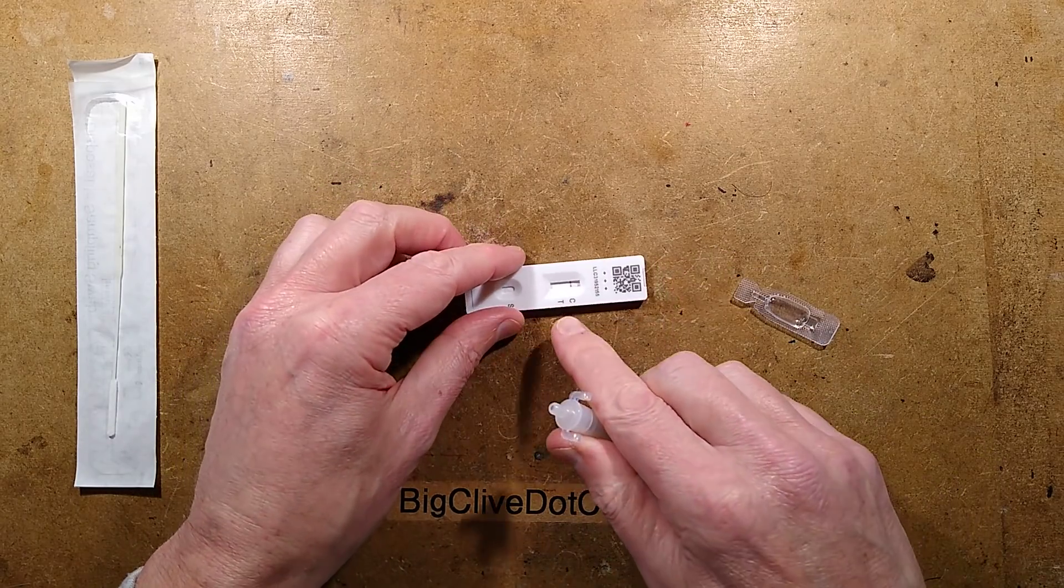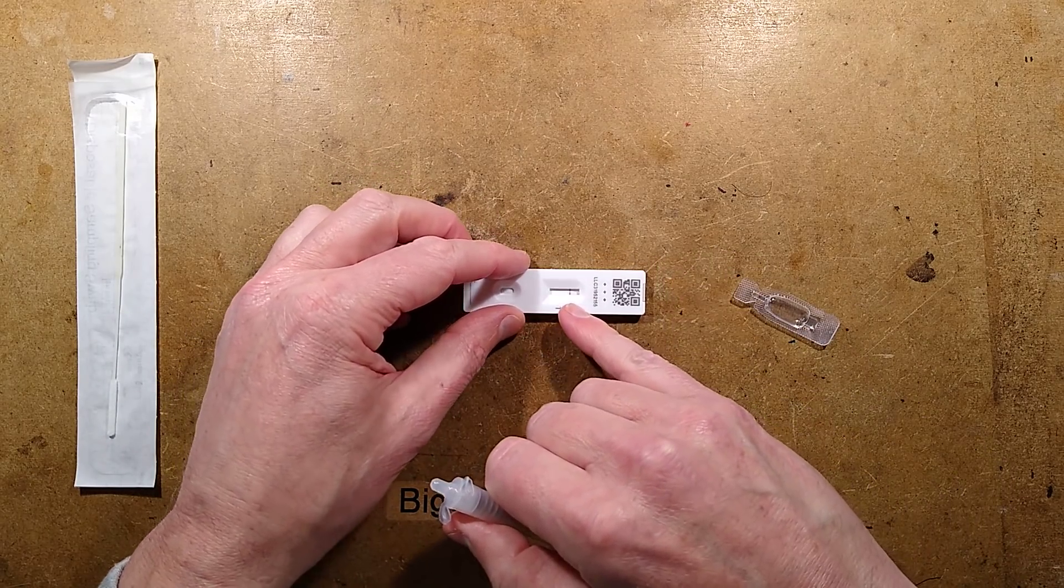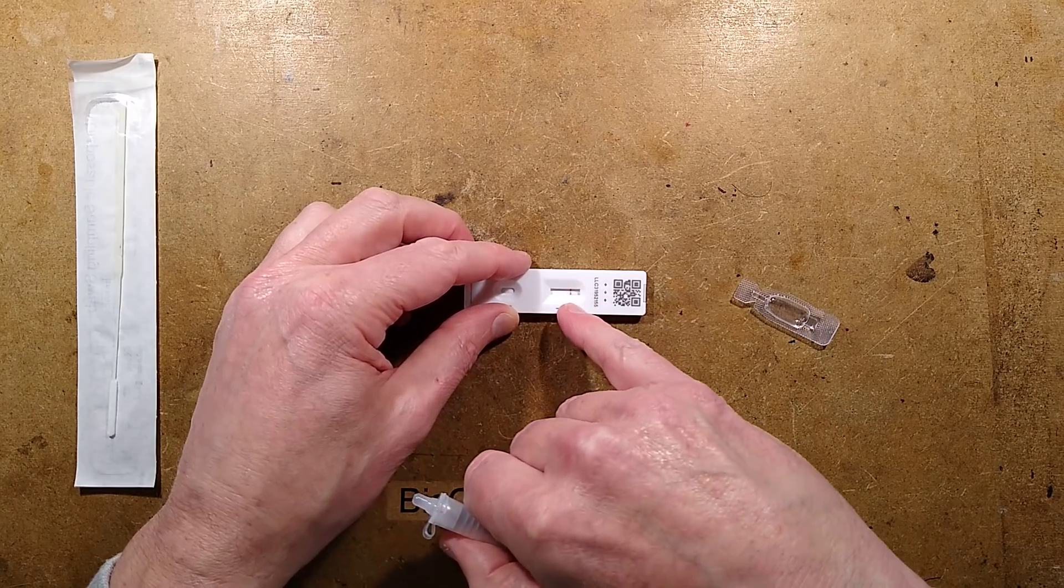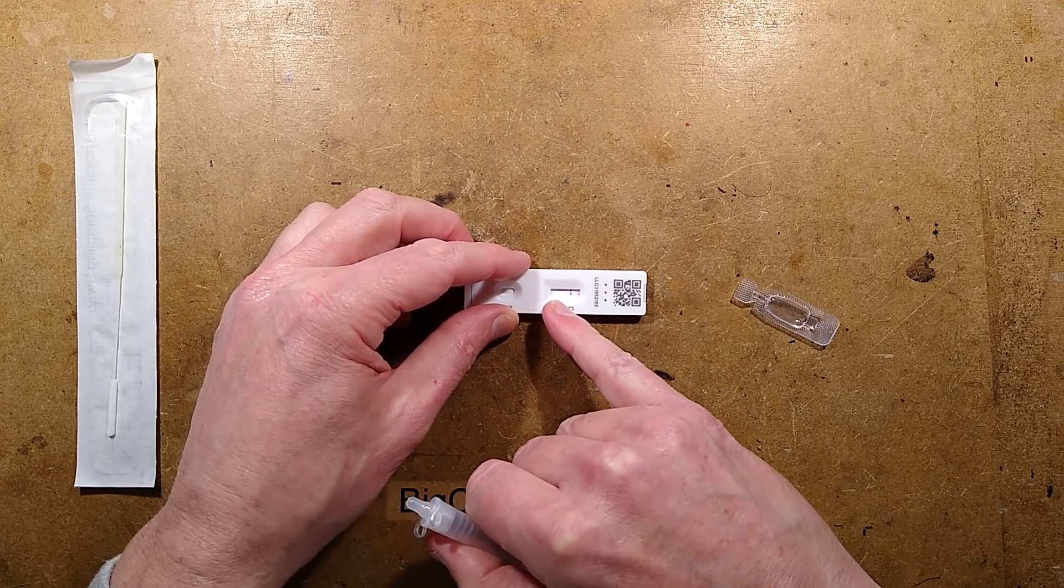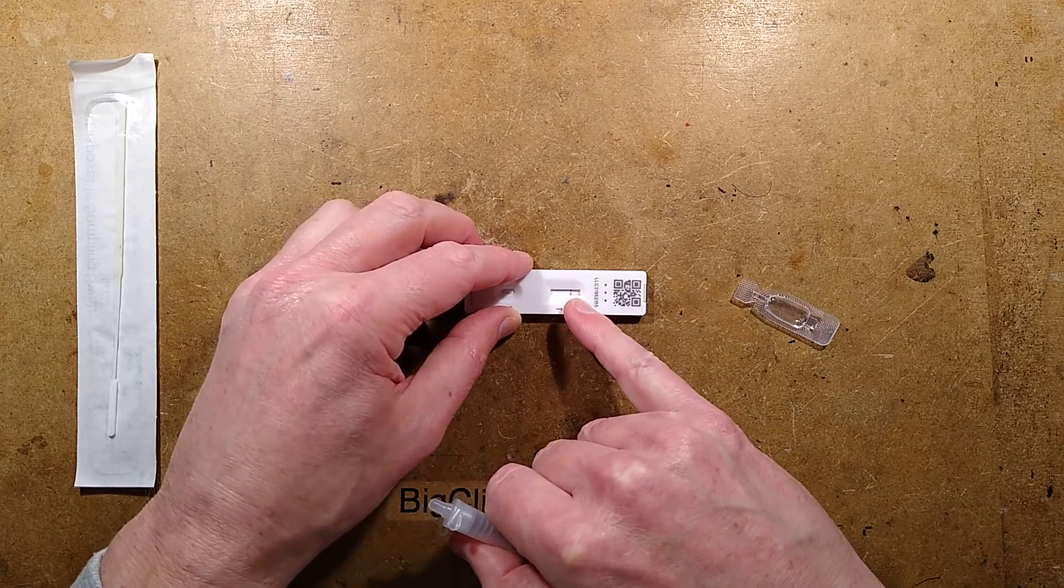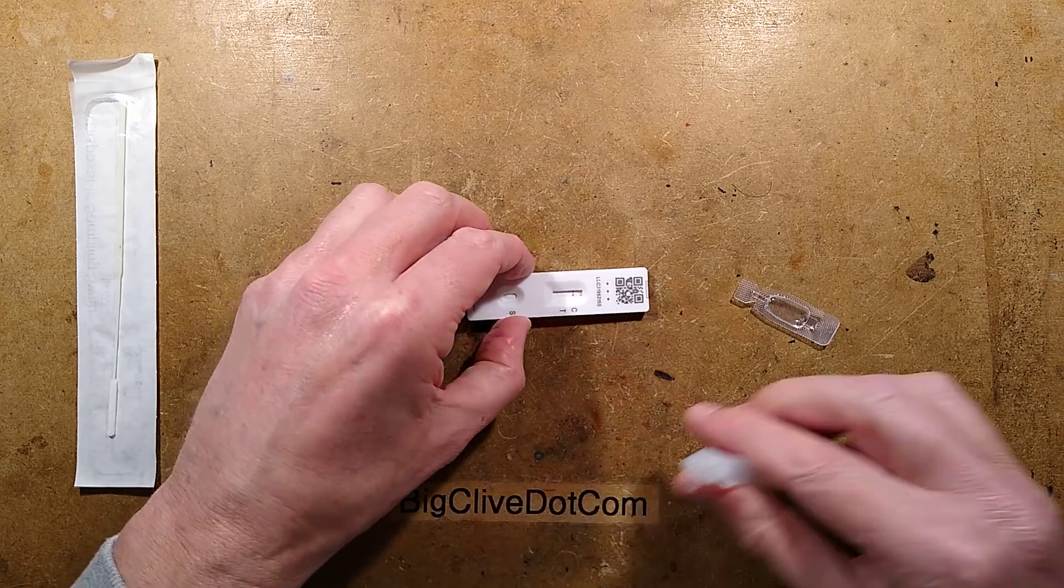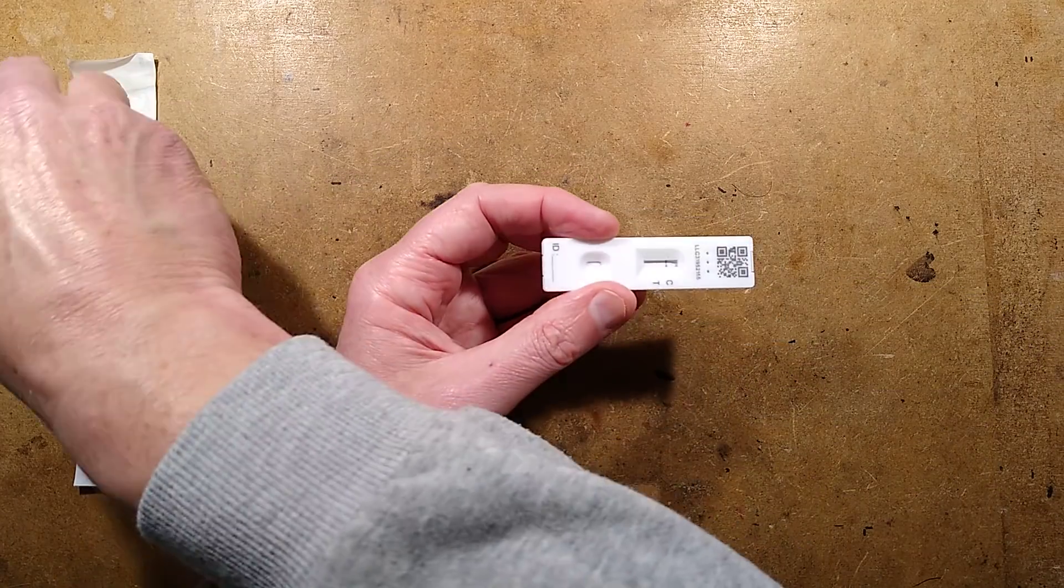You put a couple of drops into this reservoir here and it starts the process of wicking along inside. And after about 30 minutes, you will have an indication - either just the C line will appear, or T for a positive confirmation and the C which is the confirmation line.